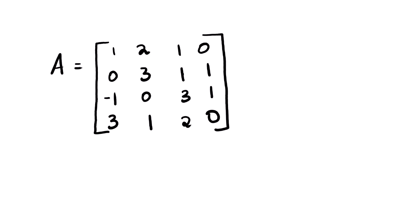The first step, we need to create a sign pattern: positive, negative, positive, negative. Going to the second row: negative, positive, negative, positive. The third row: positive, negative, positive, negative. The last row: negative, positive, negative, positive.